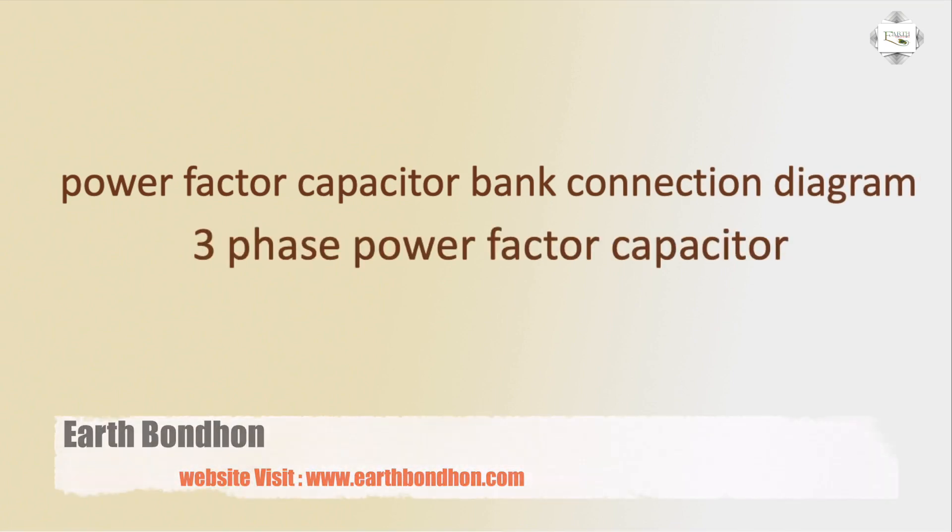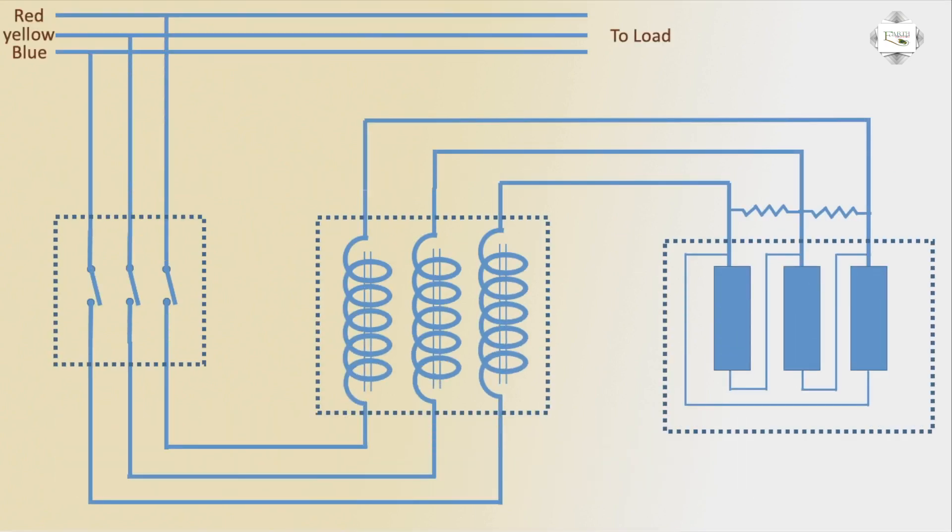3 phase power factor capacitor. 3 phase line: 1st line red phase, 2nd line yellow phase, 3rd line blue phase.